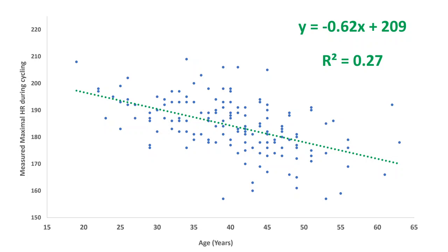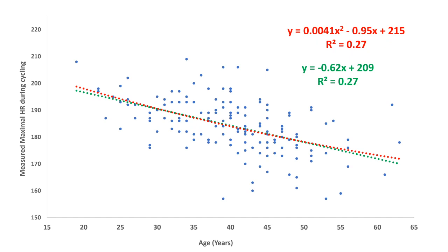This type of approach has been done many times over the years and there have been a lot of different equations applied. The equations we tend to use are linear, but if we think it might be slightly non-linear — perhaps maximum heart rate is leveling out and the decline is not linear — we can force a different kind of equation onto the data. But looking at the change in shared variance, it doesn't help. It's not better explained by a non-linear or polynomial equation than by a linear one, and this has been seen in many studies.